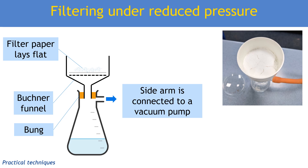The sidearm of the flask is connected to a vacuum pump — either a special lab vacuum pump or something fitted to a tap that uses a change in water pressure to create suction. It just sucks air through, and the net result is that filtration is faster. This does not help you get any purer solid, but it allows you to do all three filtration steps efficiently: filtering the crude solid from the reaction mixture, filtering the hot solution to remove insoluble impurities, and filtering again after cooling to collect pure crystals.